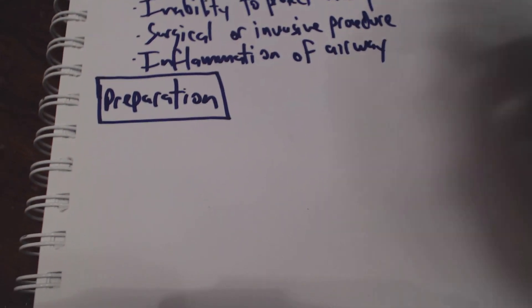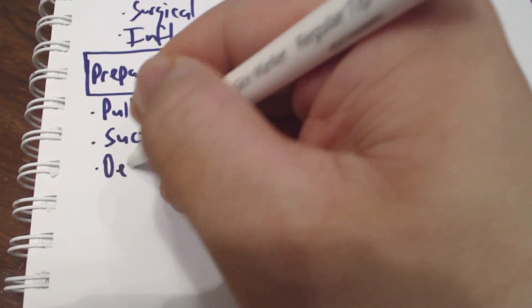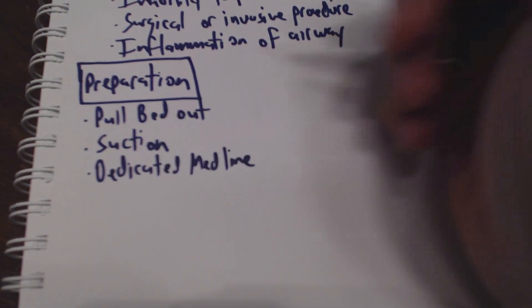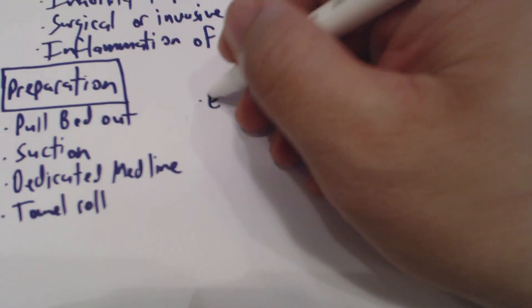In terms of being in the critical care setting, as nurses there's a preparation game. The first thing you can do is pull out the bed. Make sure that your suction is set up and actually working — it's very important to have that. We have a dedicated medication line; most intubations the patient will be awake, but sometimes we'll need to give sedation if they're fighting us, so we want a dedicated line with normal saline. Also a towel roll placed underneath the neck to hyperextend and get a better view of the glottis. And we need the endotracheal tube and endotracheal tube holder.